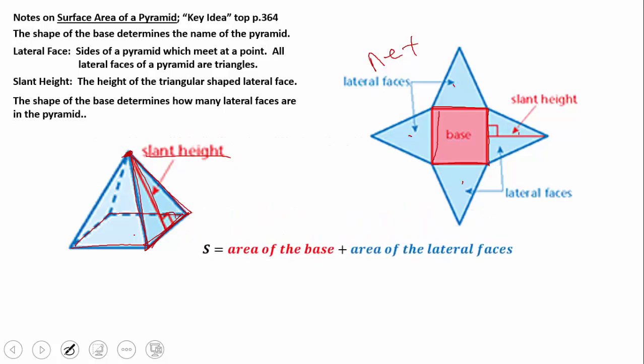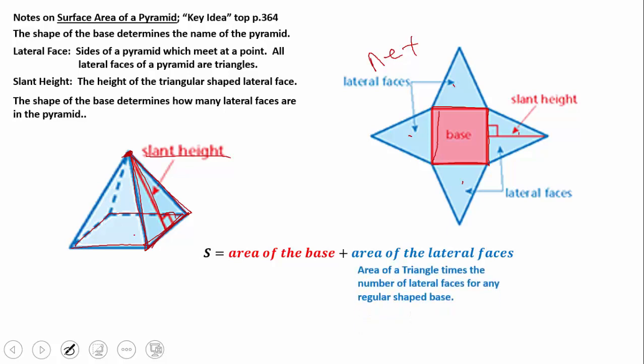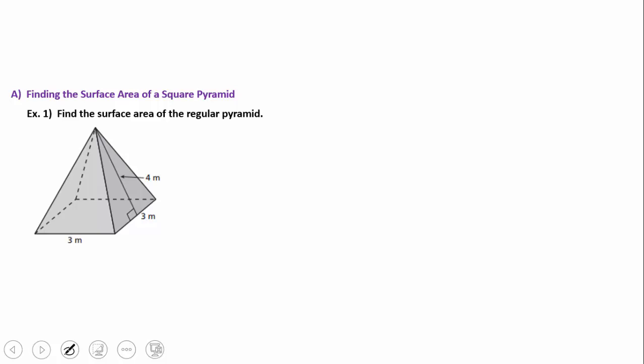The surface area of a pyramid equals the area of the base plus the area of the lateral faces. We'll mostly deal with regular pyramids, meaning the base shape is regular — all sides are the same. That's important because if all sides are the same, every lateral face is exactly the same size, so you can multiply the area of one lateral face by the total number of lateral faces. Let's move into example one: find the surface area of this square pyramid.